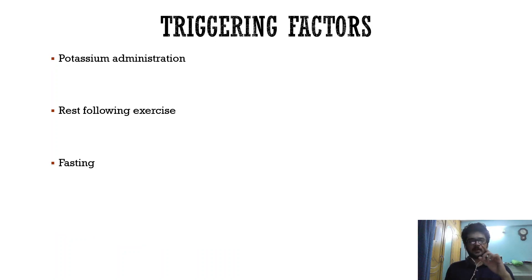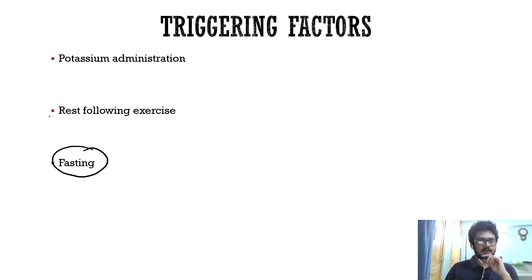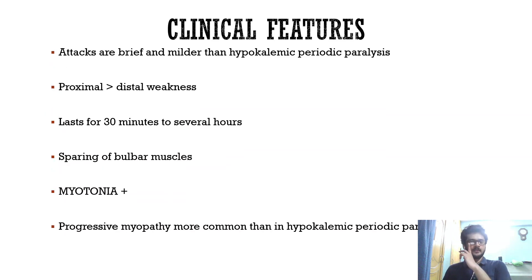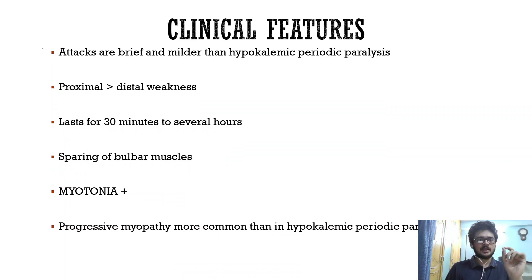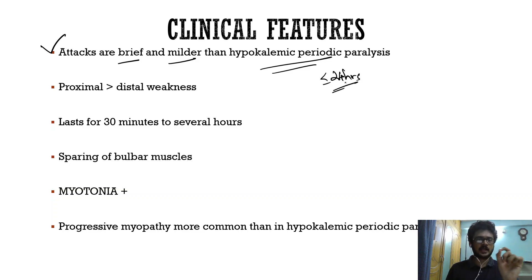The triggering factors differ from hypokalemic PP. A high carb, high sodium diet triggers hypokalemic attacks, whereas fasting triggers hyperkalemic periodic paralysis. Other triggers include rest following exercise and potassium administration. Clinical features include flaccid quadriparesis or quadriplegia, but attacks are brief and milder. Hypokalemic PP can last up to 24 hours, whereas hyperkalemic PP attacks are much shorter.